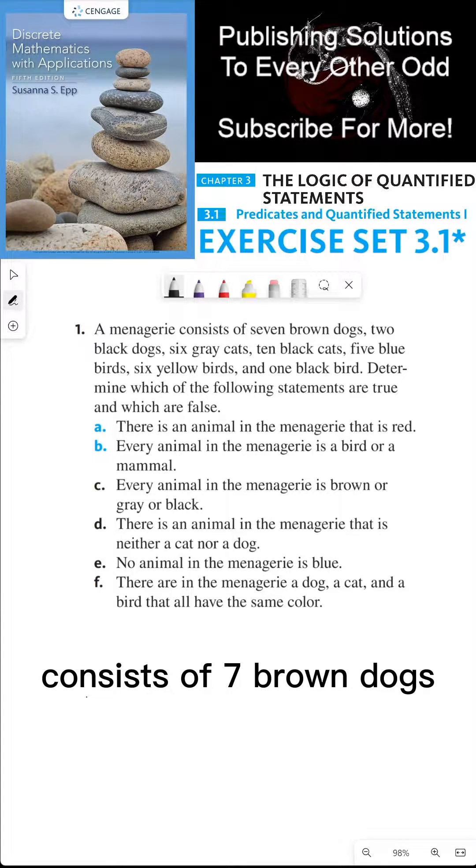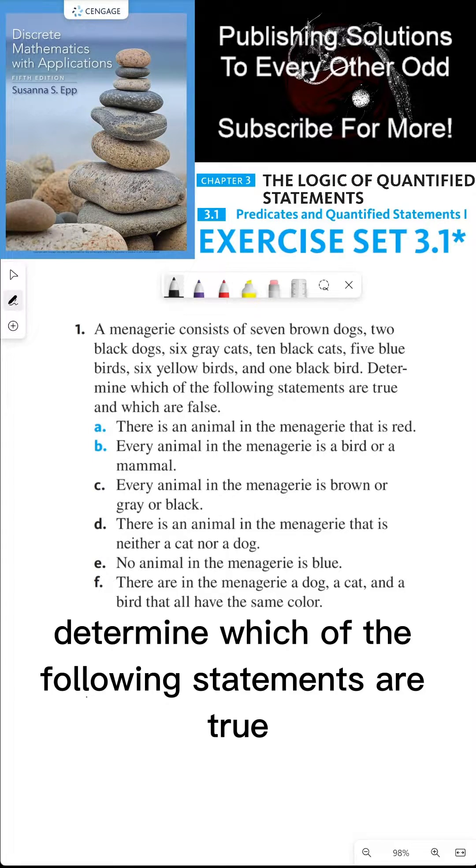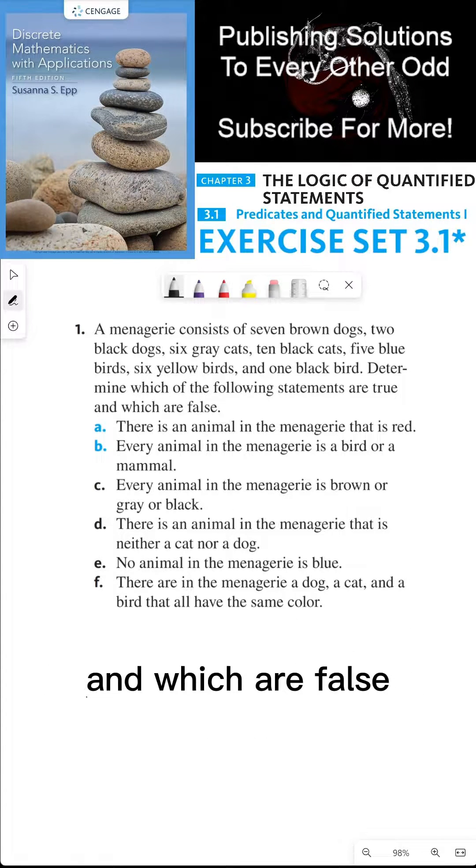A menagerie consists of seven brown dogs, two black dogs, six gray cats, ten black cats, five blue birds, six yellow birds, and one black bird. Determine which of the following statements are true and which are false.